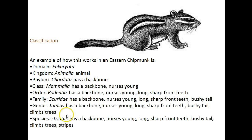Let's look at this eastern chipmunk and the classification for it. Going past the domain and into kingdom, the kingdom is Animalia, or the animal kingdom. Phylum Chordata — it has a backbone. The class is Mammalia, it's a mammal, it has a backbone and it nurses its young. The order is Rodentia — it's a rodent, has a backbone, nurses its young, has long sharp front teeth.